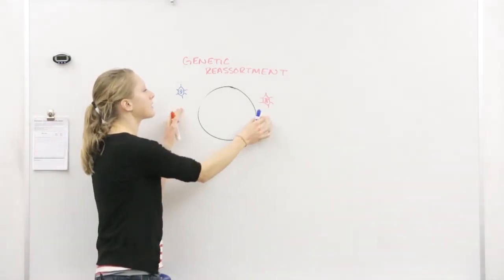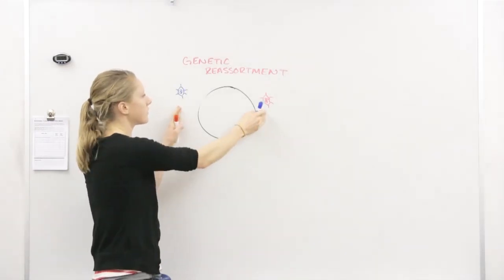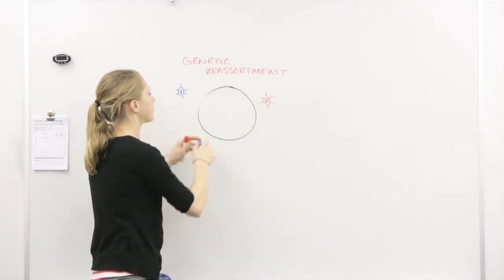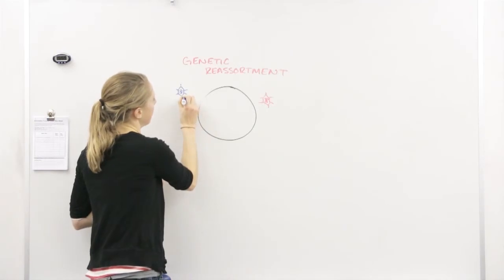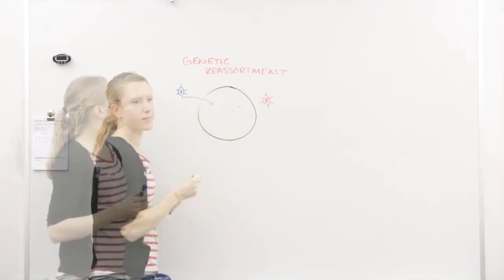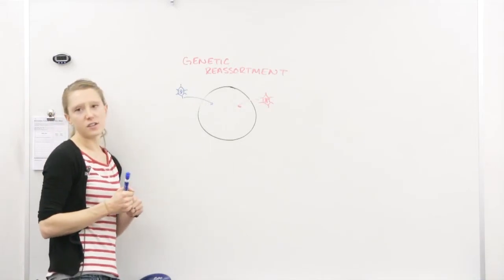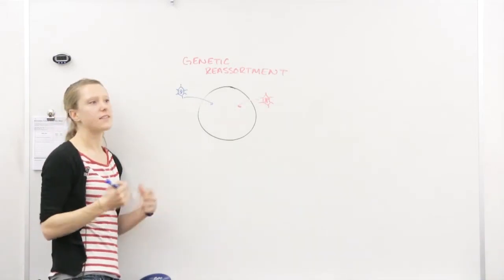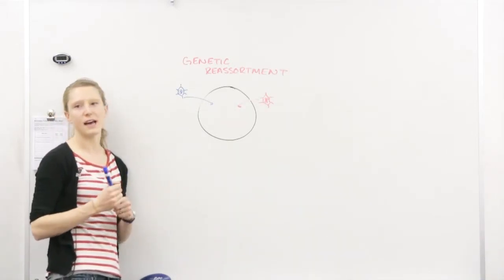Now, not only are you infected with two strains, but one of one strain and one of the other strain just happen to enter the same host cell at the same time. So these two strains enter the host cell at the same time. And what have I been saying? Their genome is segmented. What does that mean?